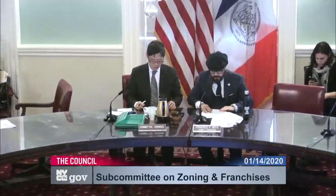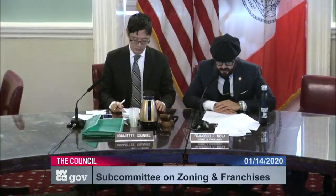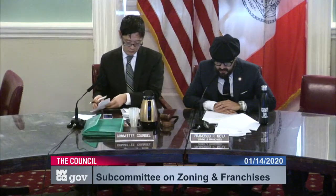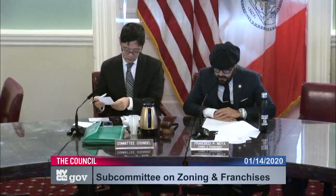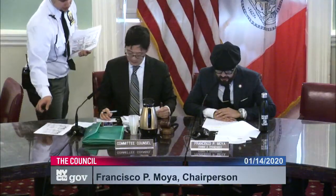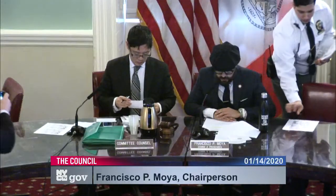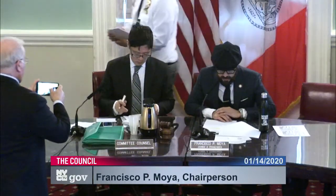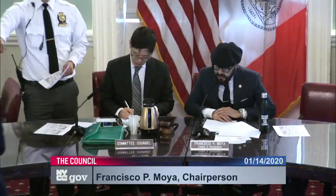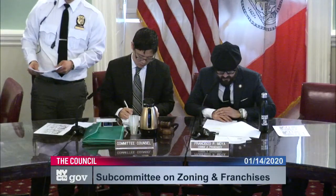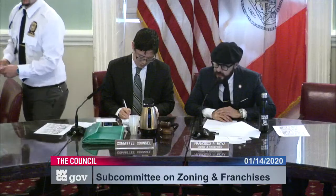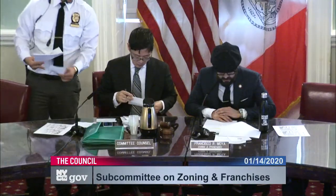We will begin this meeting with our hearing starting with pre-considered LU item C190029 ZMQ for the 147-40 15th Avenue rezoning proposal relating to property in Councilmember Valone's district in Queens. The applicant seeks approval for a zoning map amendment to map a C12 commercial overlay district within an existing R3A district along the south side of 15th Avenue between 147th Street and 149th Street in Whitestone, Queens.